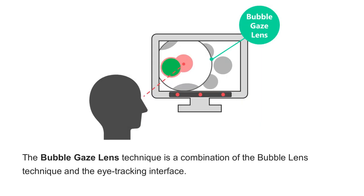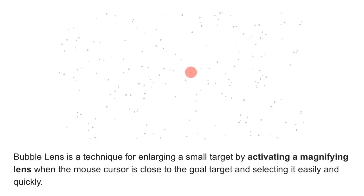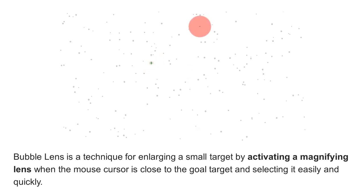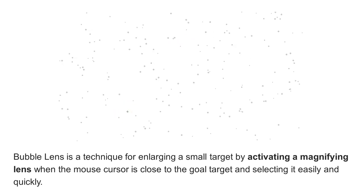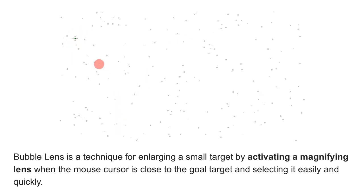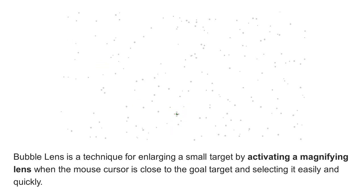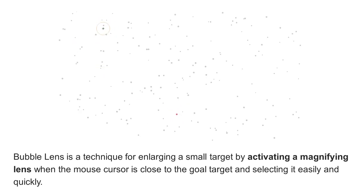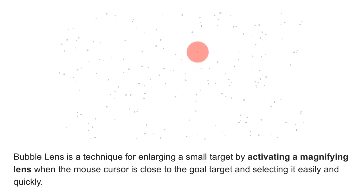The bubble gaze lens technique is a combination of the bubble lens technique and the eye tracking interface. The bubble cursor performs poorly when targets are small and densely packed. Bubble lens is a technique for enlarging a small target by activating a magnifying lens when the mouse cursor is close to the goal target and selecting it easily and quickly.